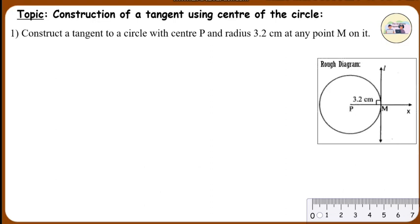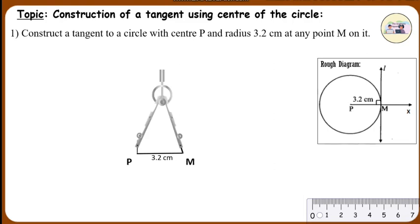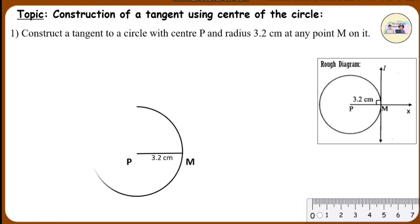A tangent is always perpendicular to the radius. Steps of Construction: Draw a circle with center P and radius 3.2 cm. Take any point M on the circle. Draw a ray PM and extend it to any point X.